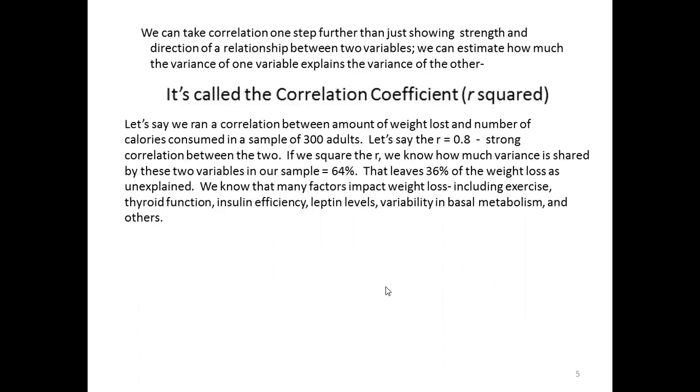Let's say that we run a correlation between the amount of weight lost and number of calories consumed in a sample of 300 adults. Let's say that when we get done with our correlation, we come out with an r of .8. This is a strong correlation. If we square the r, we know how much variance is shared by these two variables in our model or our sample, which is 64%.